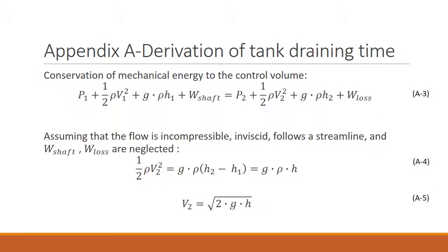The conservation of mechanical energy to the control volume can be used. In this case, with the assumptions that we've made earlier, a lot can be simplified. Assuming that the flow is incompressible, inviscid, follows a streamline and the shaft loss and the head loss are neglected. So then V2 is equal to the square root of 2 times G times H, where G is 9.81 meter per second squared.